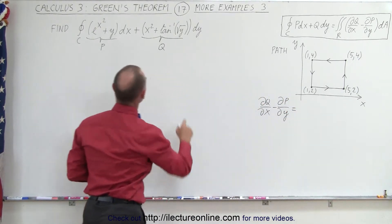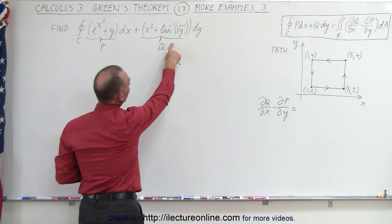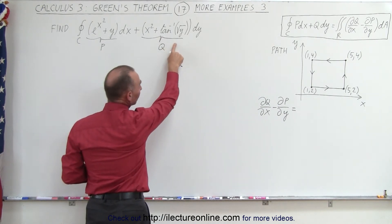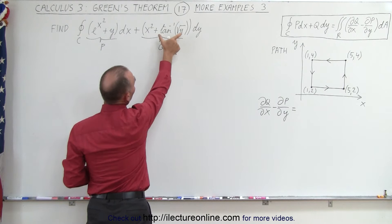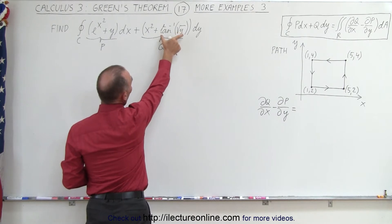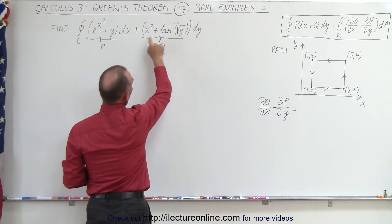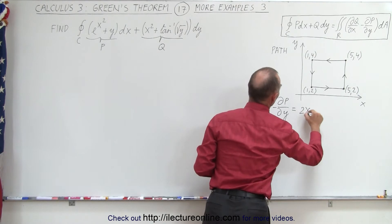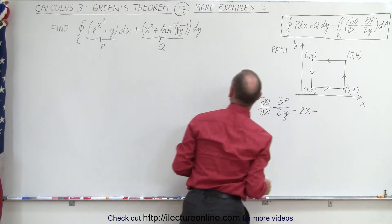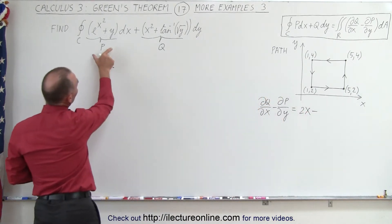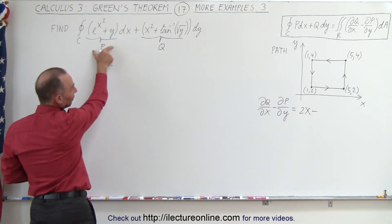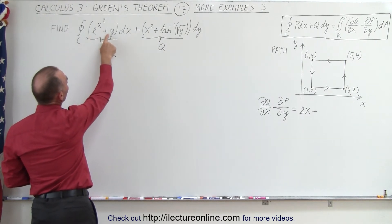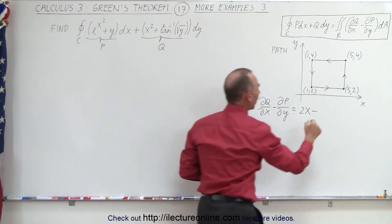Going over here, this is Q — we're going to take the partial derivative of this with respect to x. Since this is a function of y, that's a constant and goes to zero, so we end up with simply 2x. Subtracting from that, we take the partial derivative of P with respect to y — that becomes a constant, so this is simply 1.